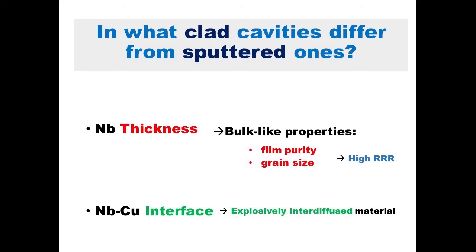Once stated that, let's analyze logically how clad cavities differ from sputtered ones. Two factors: niobium thickness, because in clad cavities it is a kind of bulk-like material with high purity, high grain size, and high RRR; and niobium interface, because in clad cavities the interface is possibly interdiffused material mixed between the two.